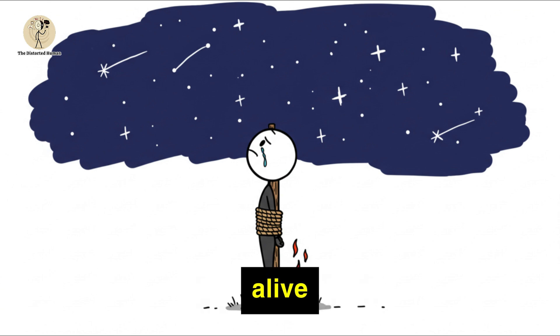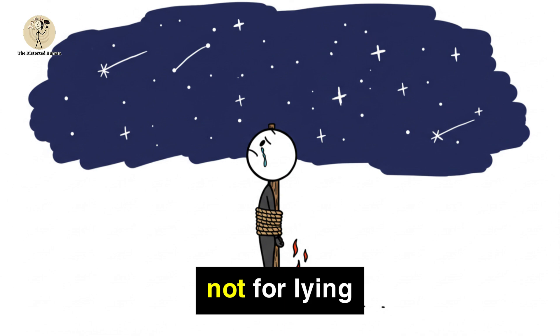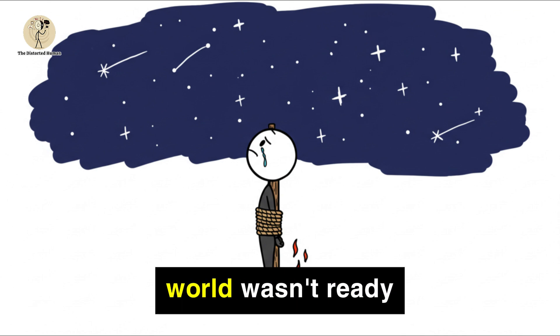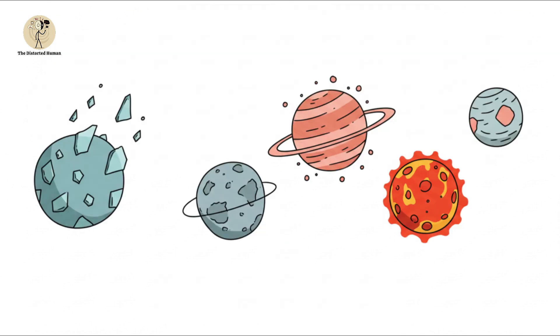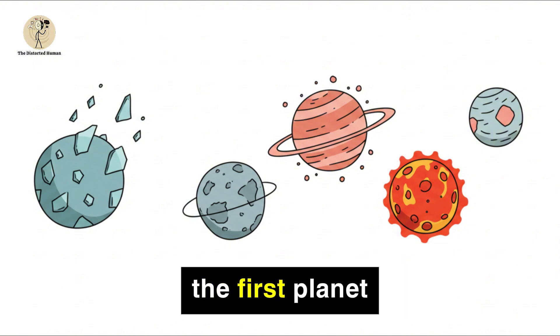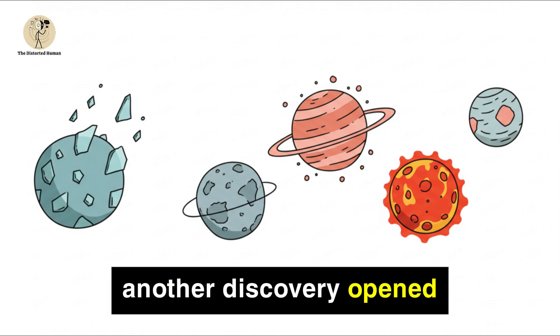Imagine being punished not for lying, but for telling a truth the world wasn't ready to hear. Fast forward to 1992, scientists finally confirmed the first planet orbiting a star outside our solar system. Just three years later, another discovery opened the floodgates.